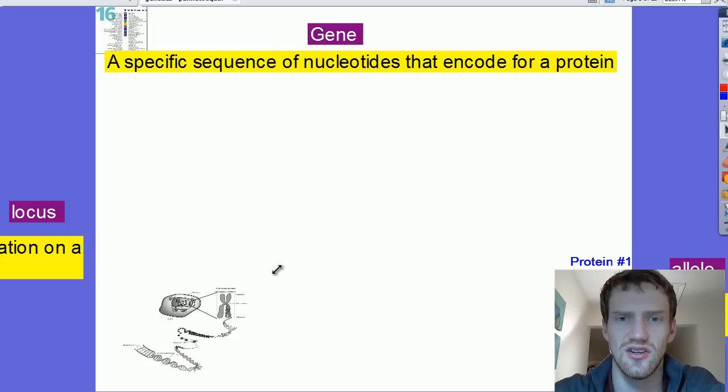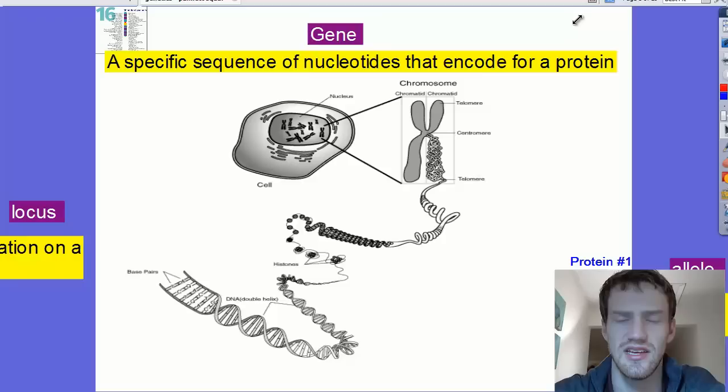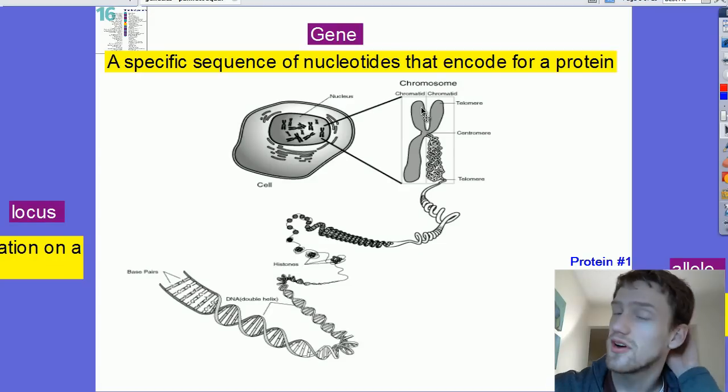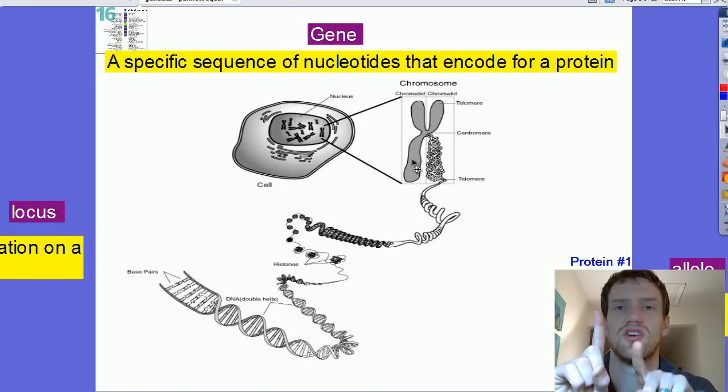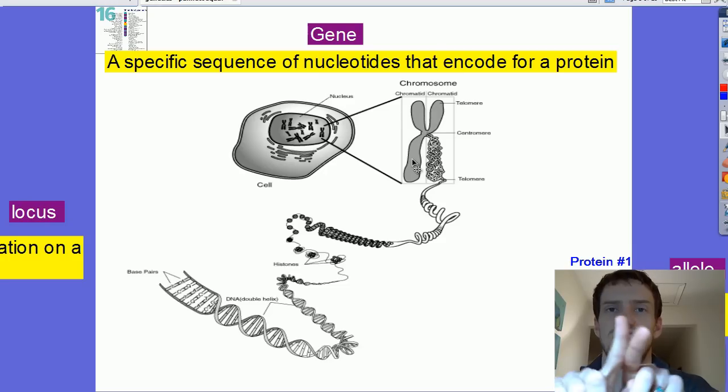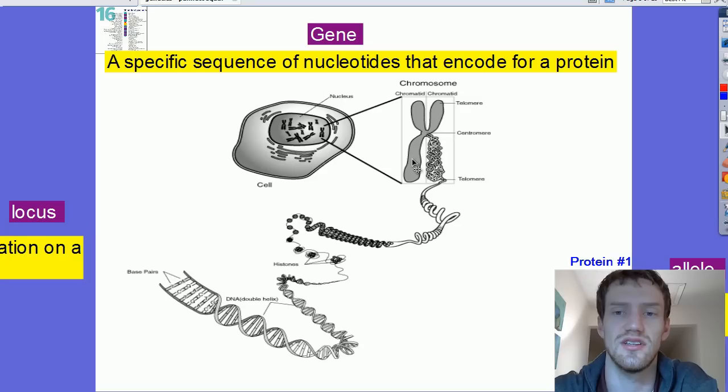If I was to look at any different cell in a body, what I would see is all of these tiny chromosomes inside of a nucleus. Now, a chromosome is made up of two separate parts. It has one side that is a chromatid and another side that is a chromatid. It forms an X shape. In the very center of that chromosome, there is a centromere, and at the very end, there is a telomere.